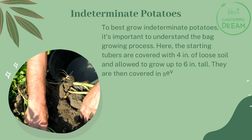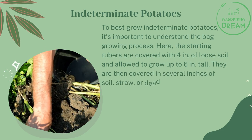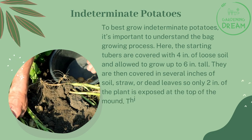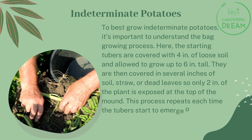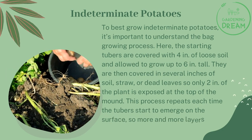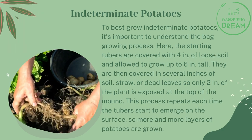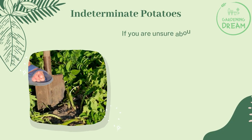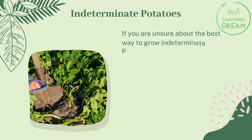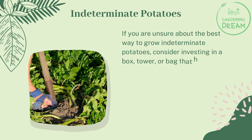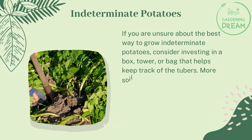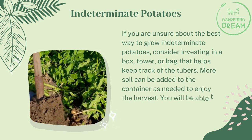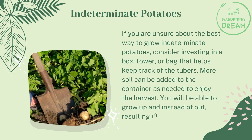In the bag growing process, the starting tubers are covered with four inches of loose soil and allowed to grow up to six inches tall. They are then covered in several inches of soil, straw, or dead leaves so only two inches of the plant is exposed at the top of the mound. This process repeats each time the tubers start to emerge on the surface, so more and more layers of potatoes are grown. If unsure, consider investing in a box, tower, or bag that helps keep track of the tubers.